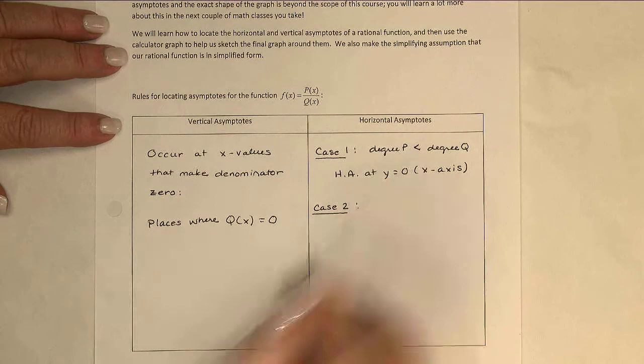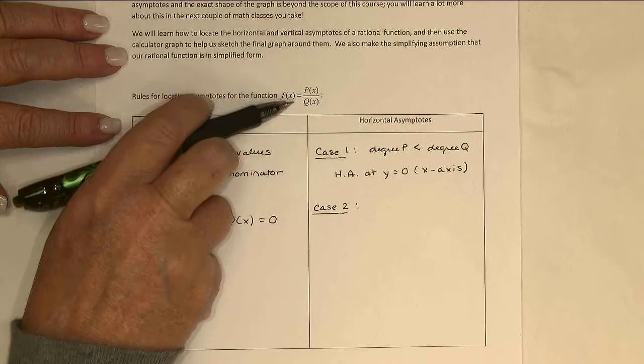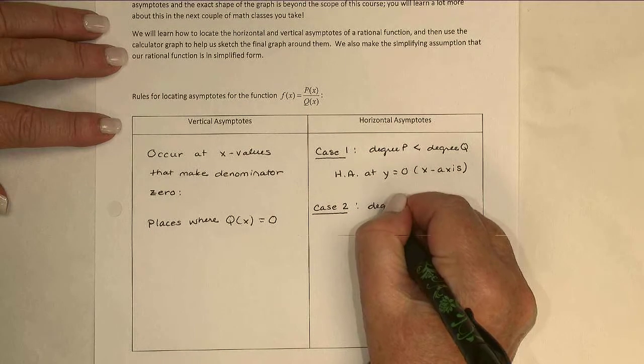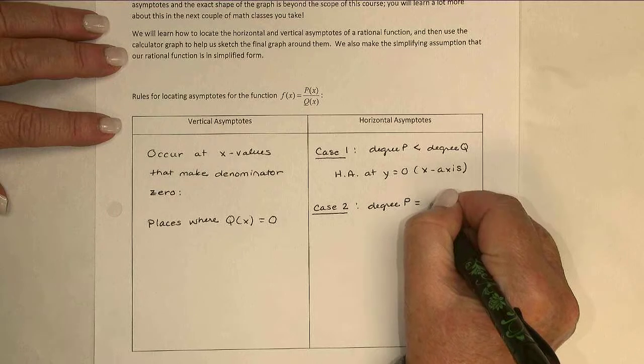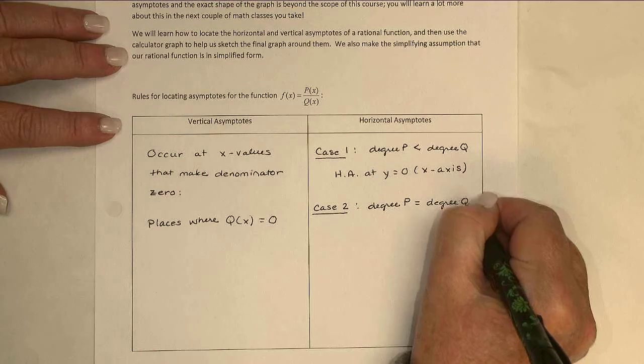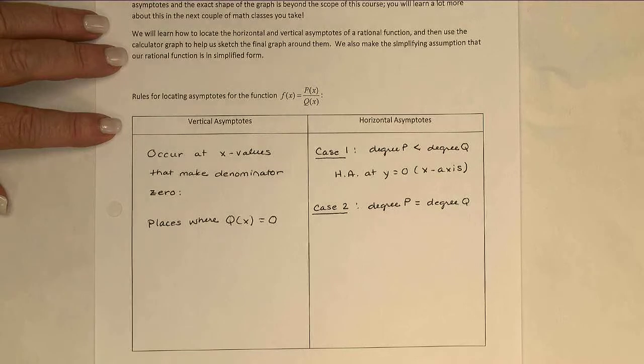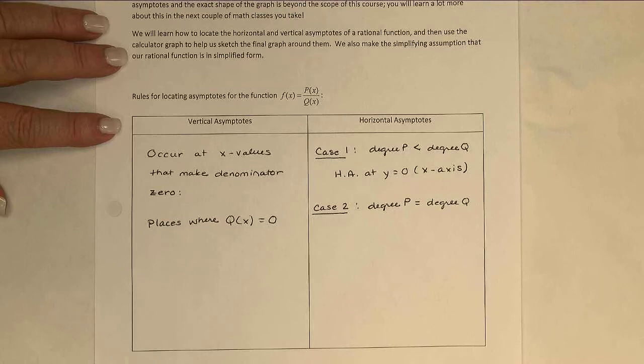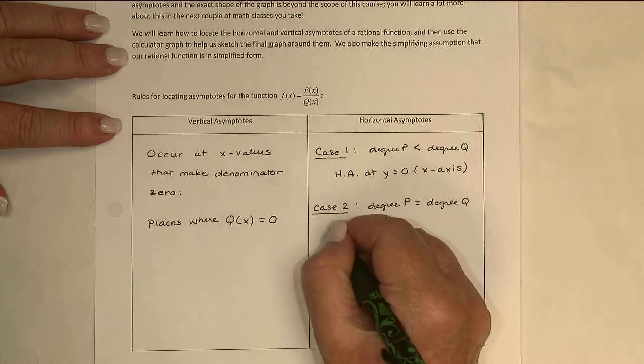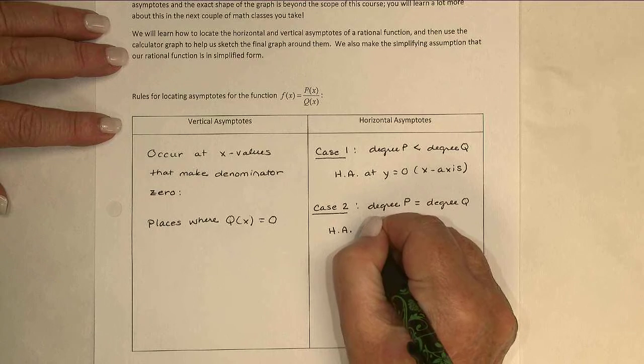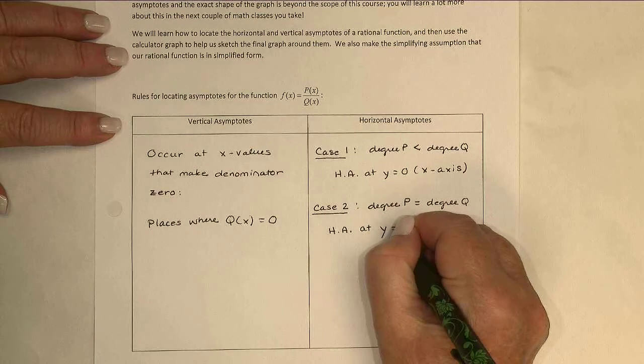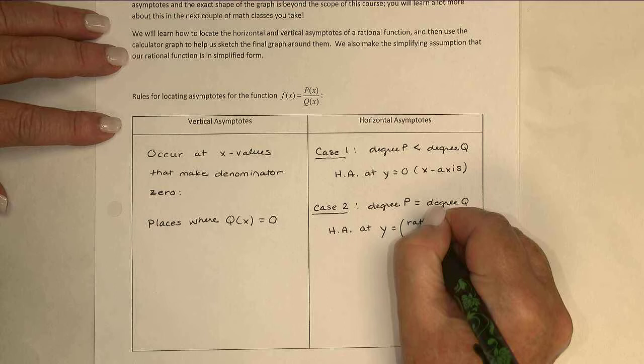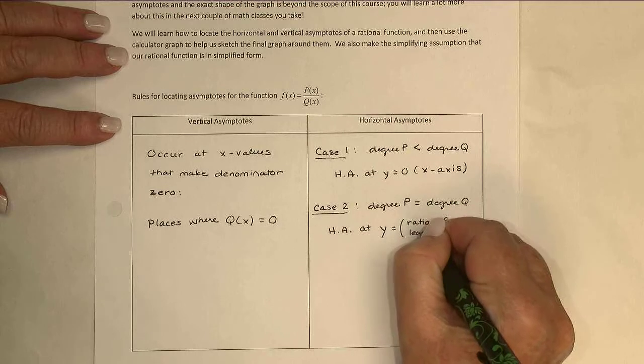The second possibility is that the degrees of the top and the bottom are the same. So this is the case where degree of p is equal to degree of q. And in that case, what you end up doing to find the horizontal asymptote is using the ratio of the leading coefficients. I know that's a lot of mathy words, and we'll review what they all mean in the context of a couple of examples here in a few minutes. But for now, I'm going to say the horizontal asymptote is y equals the ratio of the leading coefficients.